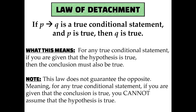It's important to note that this does not guarantee the opposite. In other words, if you know 'P then Q' is true and you're given that Q, the conclusion, is true, that doesn't necessarily mean that P, the hypothesis, is true. Your order here matters. You must be given that the hypothesis is true for you to say the conclusion is true. If you're given that the conclusion is true, it may or may not mean the hypothesis was true.